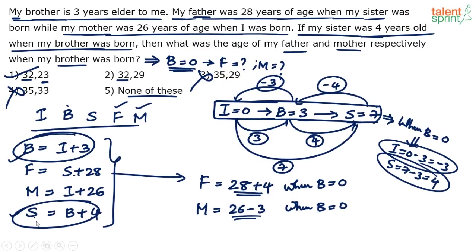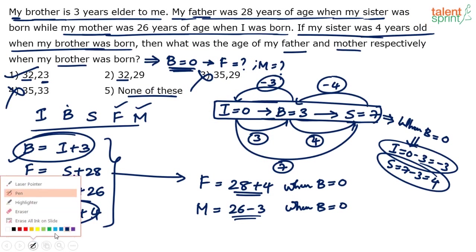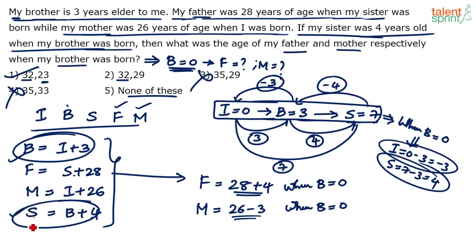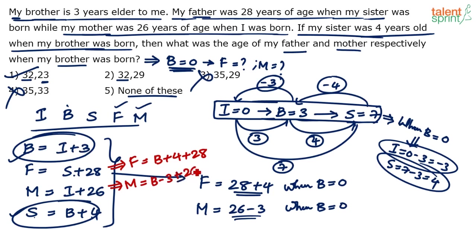For the equation-based solution: f = s + 28, and s = b + 4, so f = b + 4 + 28. Similarly m = i + 26, and i = b − 3, so m = b − 3 + 26. Now set b = 0: f = 0 + 4 + 28 = 32, and m = 0 − 3 + 26 = 23.